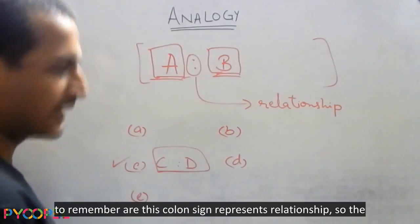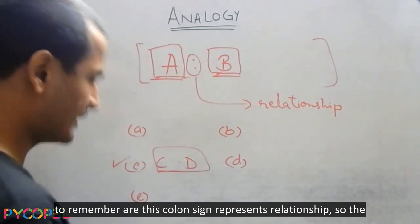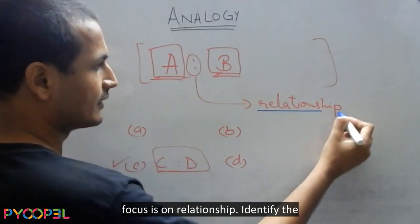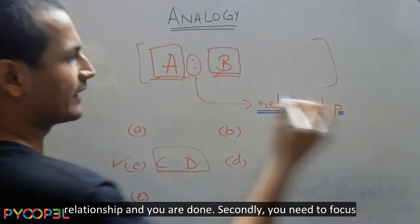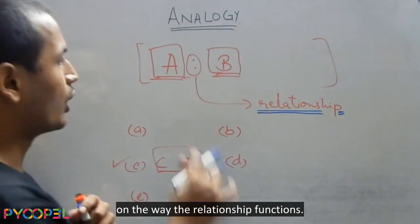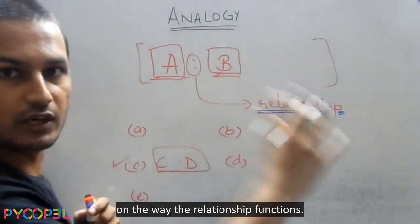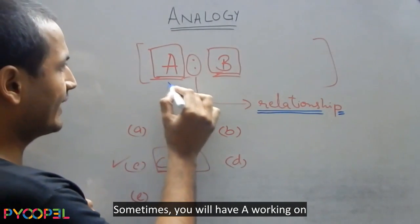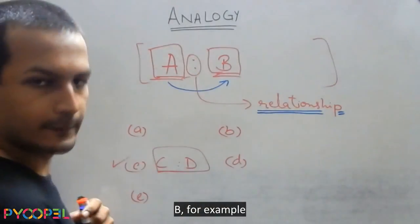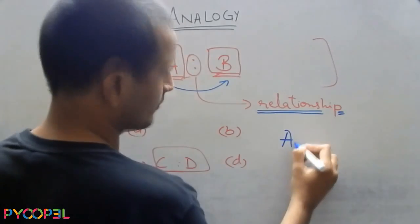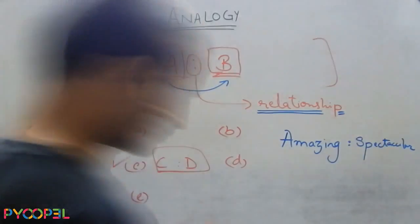A few things that you need to remember are this colon sign represents relationship. So the focus is on relationship. Identify the relationship and you are done. Secondly, you need to focus on the way the relationship functions. Sometimes, you will have A working on B in a relationship, for example.